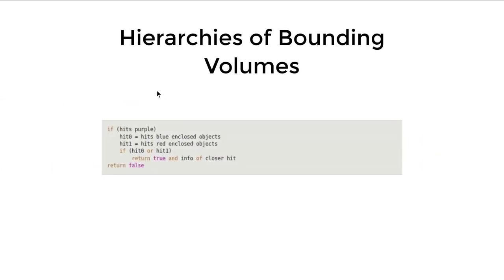Here is the pseudo-code of how we do the intersection test. If our ray does not intersect with the purple group, we don't need to delve into all the objects inside the red and blue groups. But if it does intersect with the purple group, we need to check the intersection with the red and blue groups individually by recursion. If we hit either the red or blue group, we then check for the closest hit.